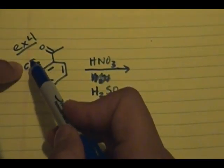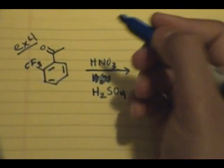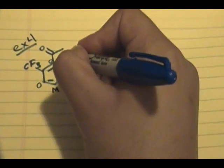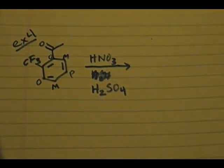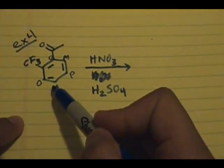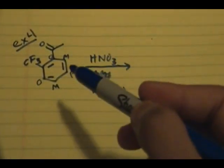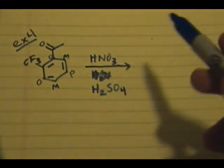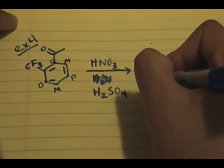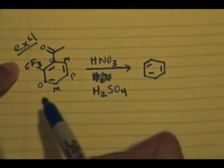So you have a strong electron withdrawing group, moderate electron withdrawing group. Strong directs to the meta position. O, M, P, this is O, M, P. So the NO2 group is going to be placed in this position. In addition, it will be placed in this position because again you cannot twist the molecule in such a way where it would form the first product. Let me show you what I mean. So a strong electron withdrawing group directs to the meta position.